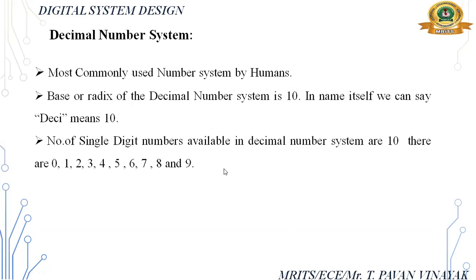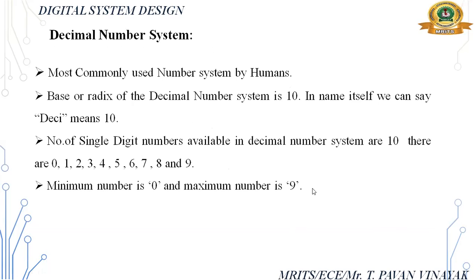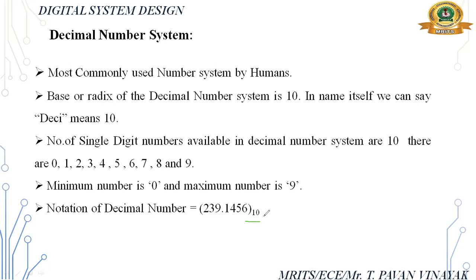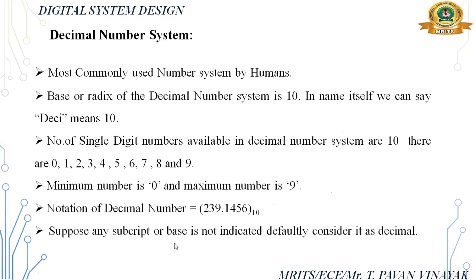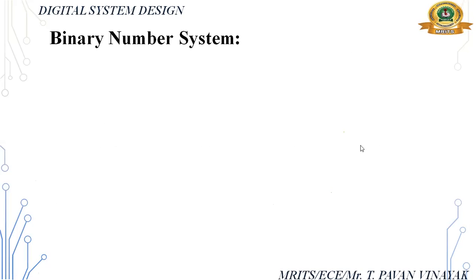For the decimal system, the radix is 10. The number of single digits are 0 to 9, so the minimum number is 0 and the maximum is 9. We provide a subscript notation to indicate the base. If no subscript is given, by default we consider the number as decimal.